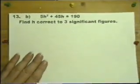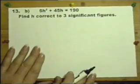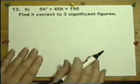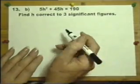Now what sort of equation is this? It's called a quadratic equation. If we have a squared term it's called a quadratic equation.